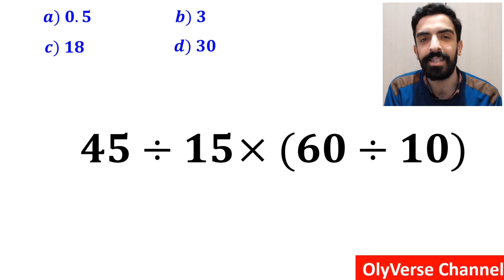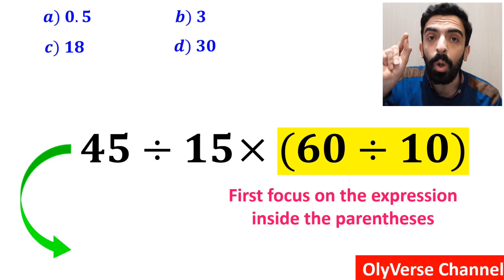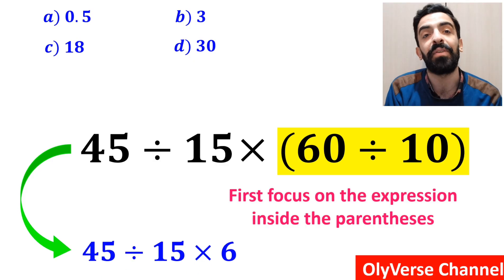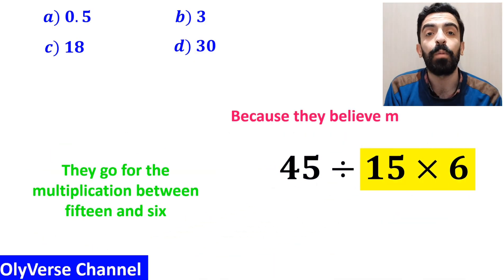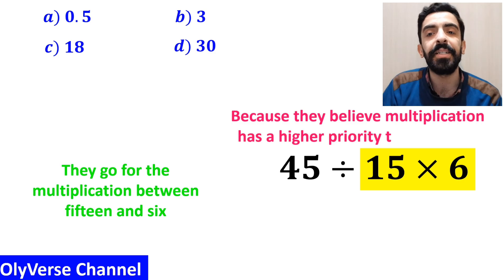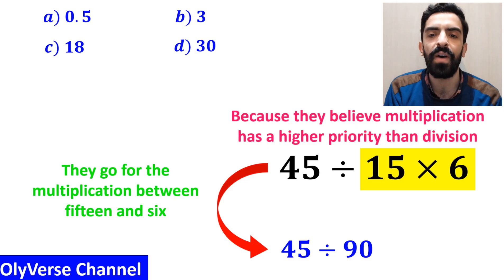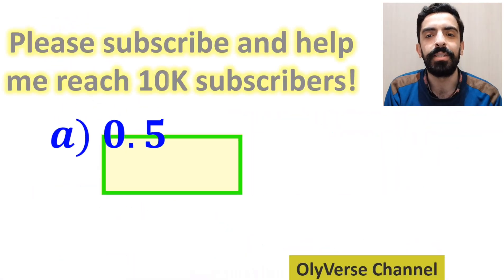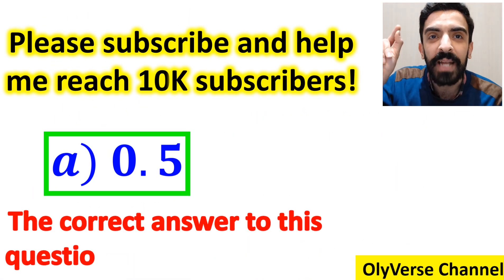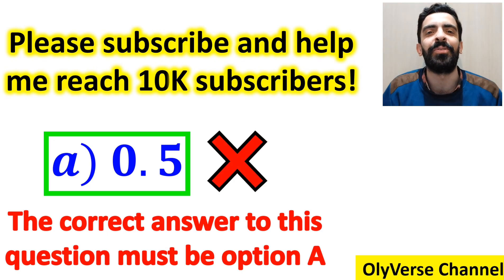Many people, when starting to solve this question, first focus on the division and multiplication instead of the parentheses, and they rewrite it as 45 divided by 15 multiplied by 6. In the next step, they go for the multiplication between 15 and 6 because they believe multiplication has a higher priority than division. So they simplify to 45 divided by 90, which gives them 0.5, and conclude that option A is correct. However, this answer is absolutely wrong.